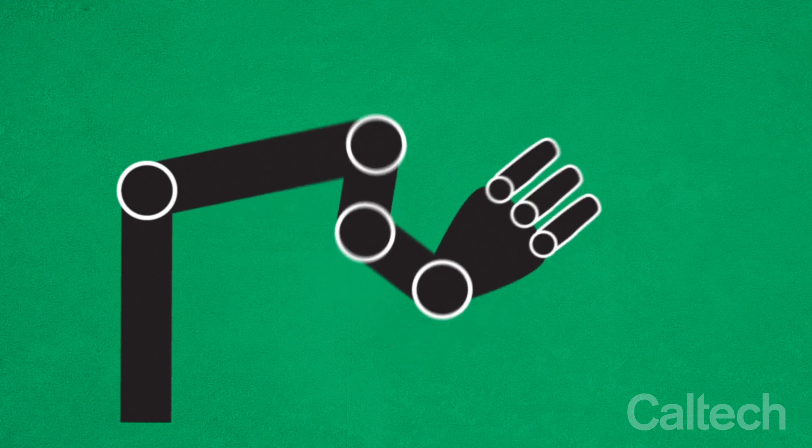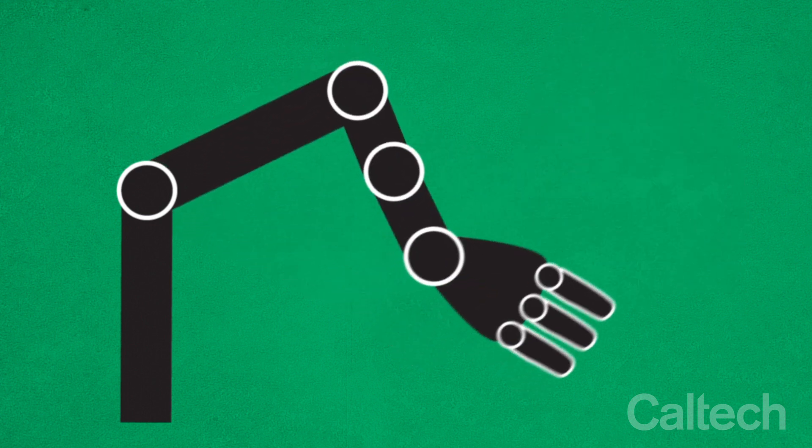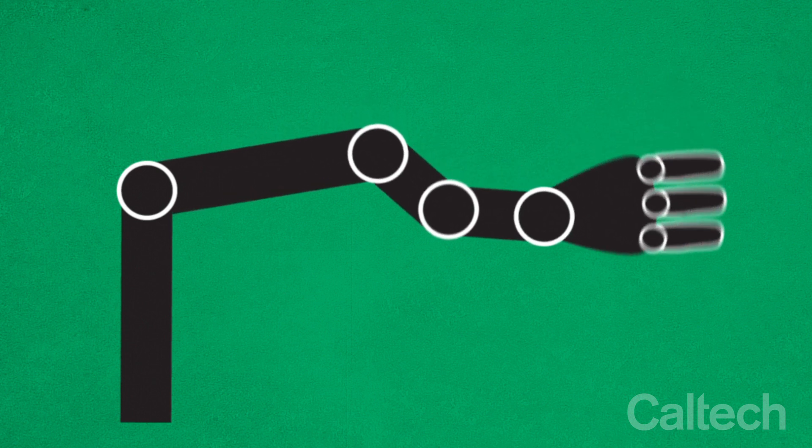But because the motor cortex is concerned with the mechanics of movement, its signals often result in slow, jerky motions.